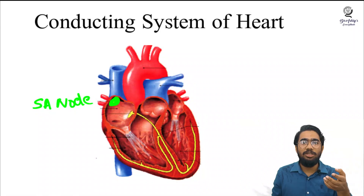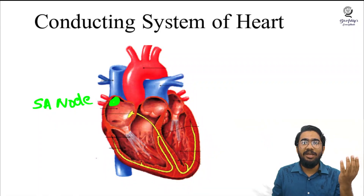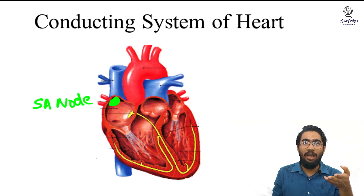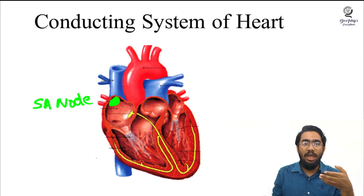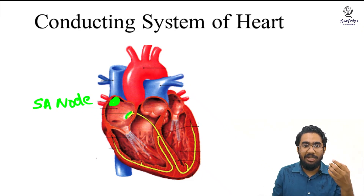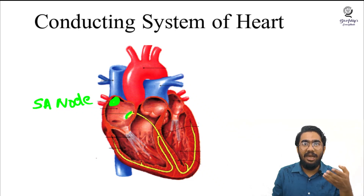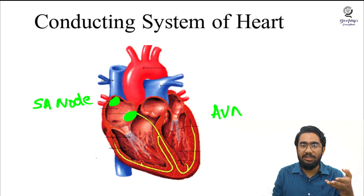The second part of the nodal system is situated near the atrioventricular septa — a wall separating the atria and ventricle — in the floor of the right atrium. This second part is known as the atrioventricular node, or in short, the AV node.